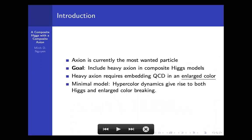This talk is about axion. Axion is currently one of the most wanted particles after the Higgs. Our goal in this paper is to include heavy axion in composite Higgs models. I don't think this has been done before.